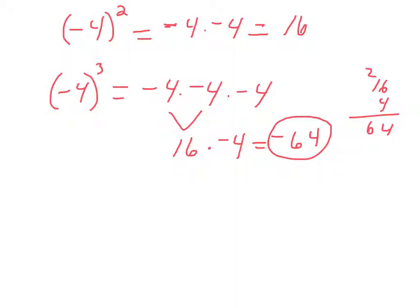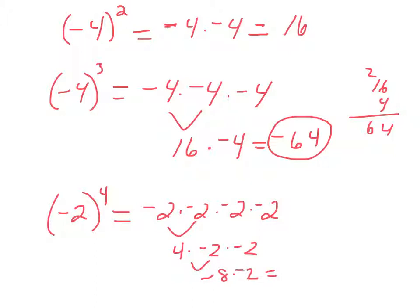How about if we have something like negative two to the fourth power? So negative two times negative two times negative two times negative two. Negative two times negative two, positive four. Positive four times negative two is negative eight. And negative eight times negative two gives us a positive 16.